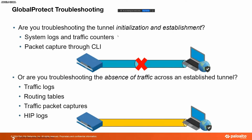There are two different issues which can come up with GlobalProtect: either the tunnel is not coming up, or the tunnel is up but there's no traffic going through. In the first scenario, you would check your system logs and traffic counters. The first thing you need to check is whether the client is sending traffic to the portal or gateway, and whether the gateway is receiving that. You would run a packet capture on your client as well as on the firewall — whether the portal or gateway — to determine if traffic is reaching the gateway and the gateway's response is reaching the client.